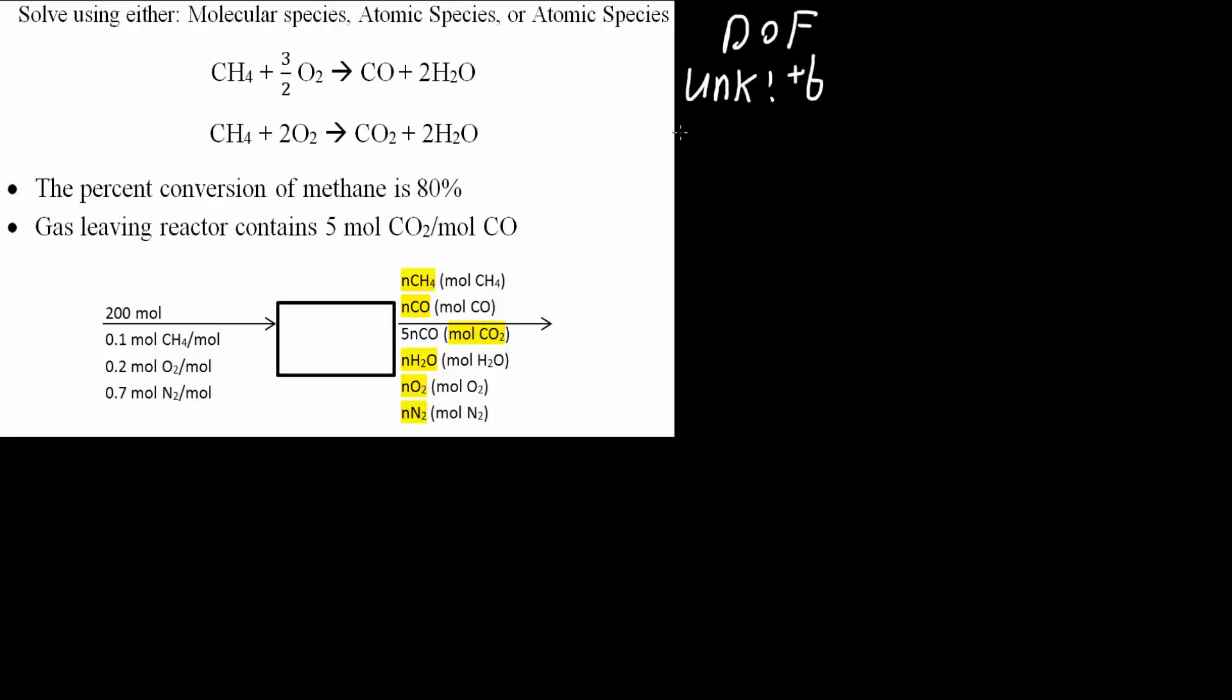How many independent reactions do we have? So we have a plus two, one, two. And now how many species do we have? We have six species, one, two, three, four, five, six, so minus six.